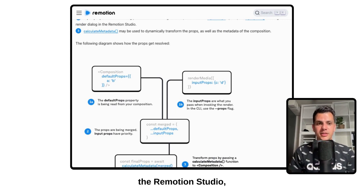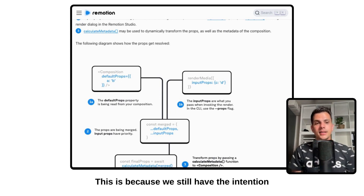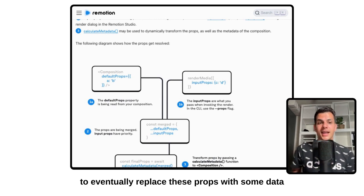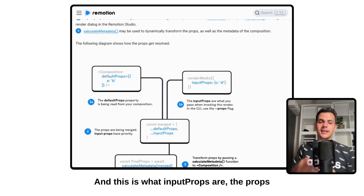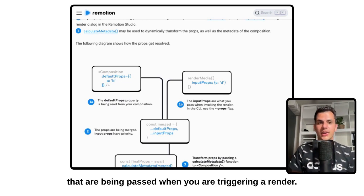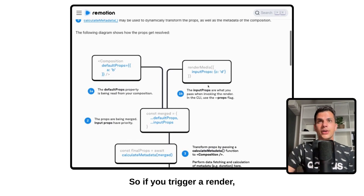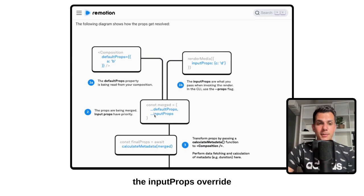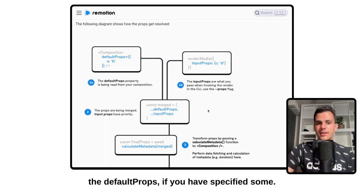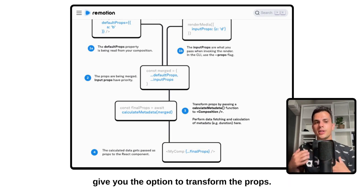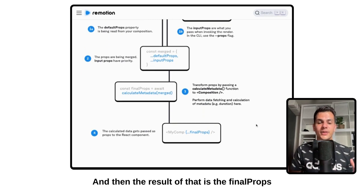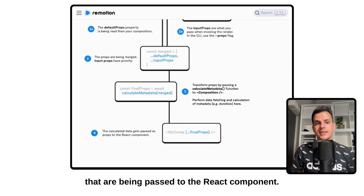In the right sidebar of the ReMotion Studio we actually edit the default props. This is because we still have the intention to eventually replace these props with some data being specified at render time — and this is what input props are. The props that are being passed when you are triggering a render. What is happening is that the input props override the default props if you have specified some, and then the calculateMetadata function gets called to give you the option to transform the props. The result of that is the final props that are passed to the React component.